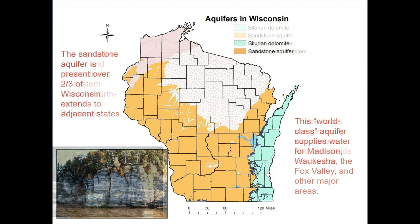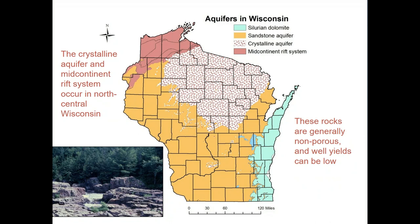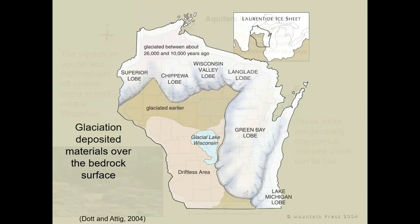In northern Wisconsin we have the crystalline or Precambrian rocks near the surface — called the crystalline aquifer. As we go to the northwest, we enter the mid-continent rift system with very old Precambrian rocks: quartzites, granite, and a large variety of interesting rocks. Generally these don't contain a lot of groundwater — water is found in fractures and cracks. Wells in those rocks often don't produce a lot of water, making it hard to develop high-capacity wells, though many domestic wells yield 10 gallons per minute or less.